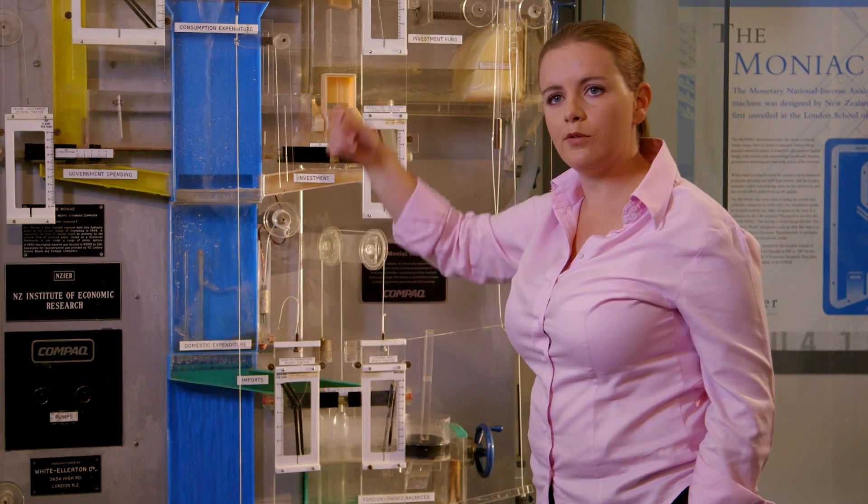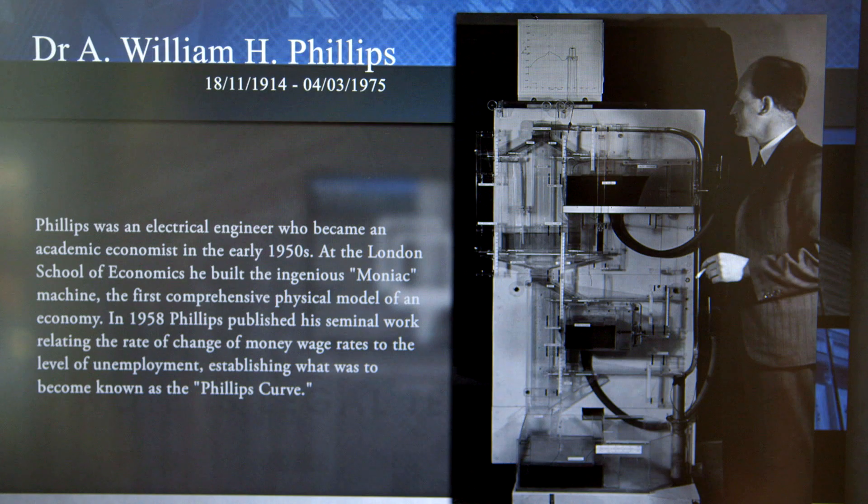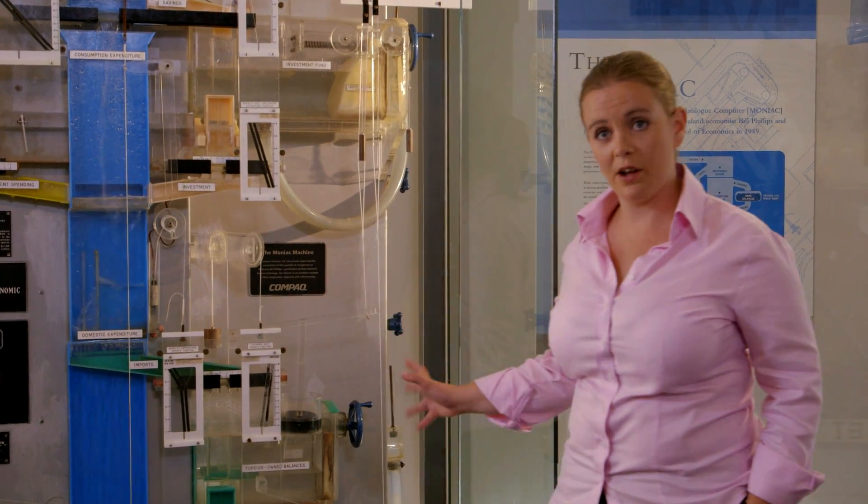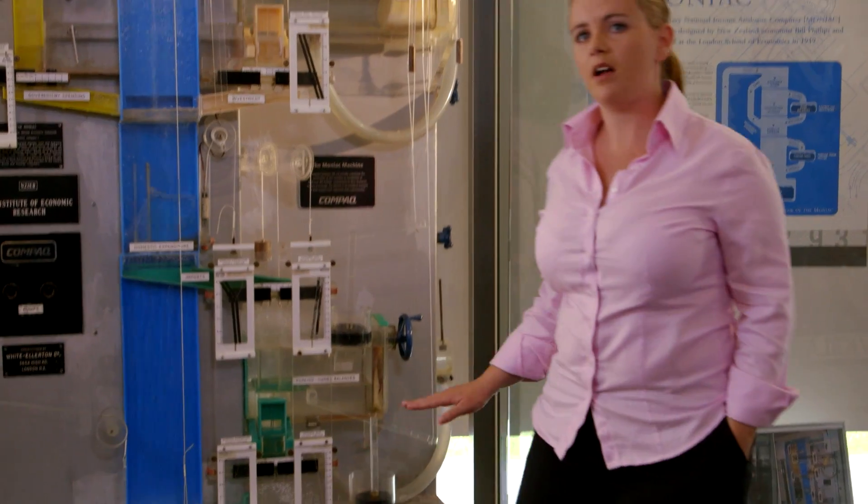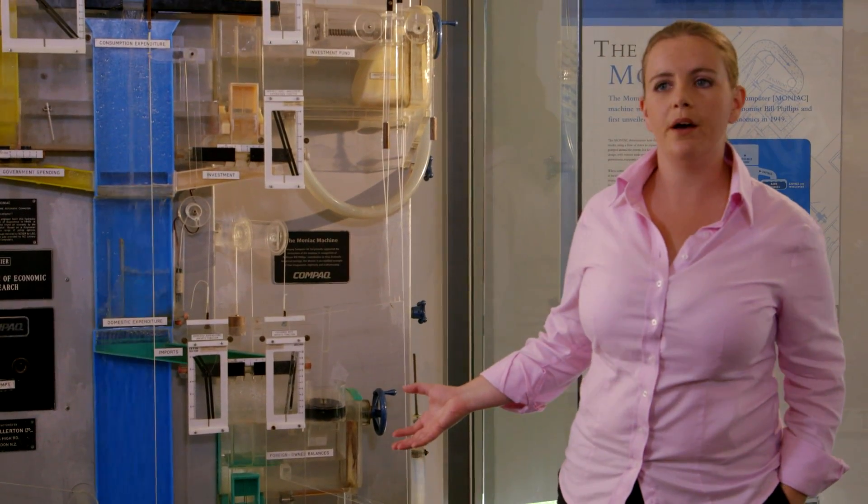It was possible, for example, for somebody like Phillips to have one operating in front of a class. What we're going to do now is we're going to do a scenario involving the central bank. The level of GDP down here is very high, so the economy is running a bit hot.